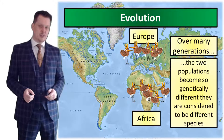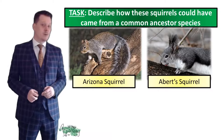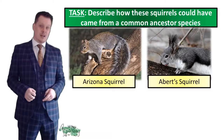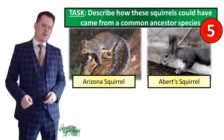Now I'd like you to describe how these squirrels could have come from a common ancestor species. Your answer should start with the common ancestor species, then they should become separated somehow, and then you need to explain the process of natural selection. Take five seconds, and if you need more time, pause the video.